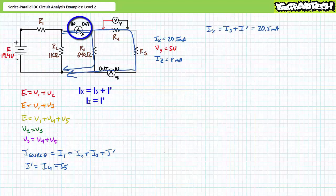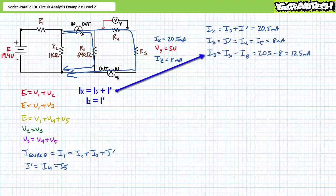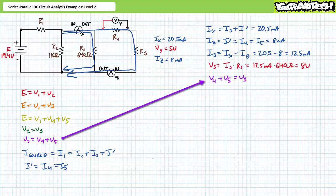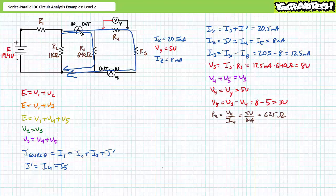Ammeter X is undoubtedly reading the combination of I3 and I single prime, and ammeter Z is reading I single prime, where I single prime equals I4 and I5. An algebraic manipulation of the Kirchhoff's current law equation solving for unknown current I3 demonstrates that I3 is the missing 12.5 milliamps. An application of Ohm's law demonstrates that V3 is 8 volts. A Kirchhoff's voltage law analysis where V3 equals V4 plus V5, and V4 is known to be 5 volts, gives V5 as the remaining 3 volts. Ohm's law solving for R4 demonstrates that R4 is 625 ohms. Similarly, Ohm's law solving for R5 demonstrates that R5 is 375 ohms.